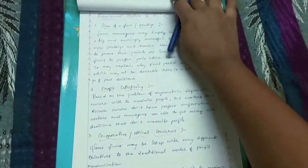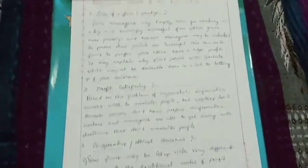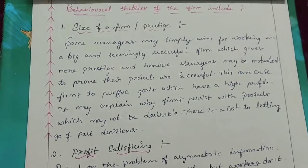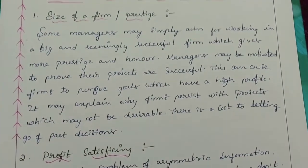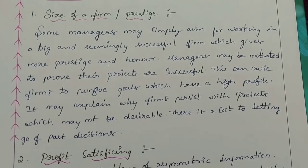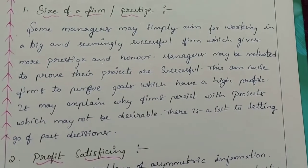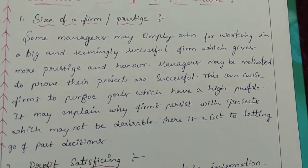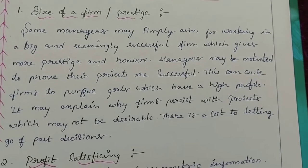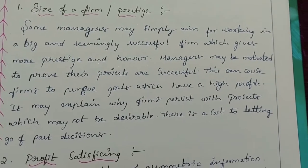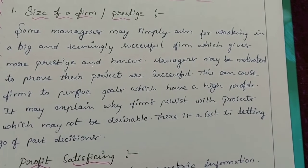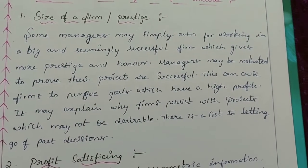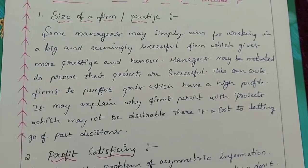Now I am going to tell you the elements of behavioral theory of the firm. Element 1: Size of a firm or prestige. Some managers may simply aim for working in a big and seemingly successful firm, which gives them more prestige and honor. Managers may be motivated to prove their projects are successful, causing firms to pursue high-profile goals. It may explain why firms persist with projects which may not be desirable.